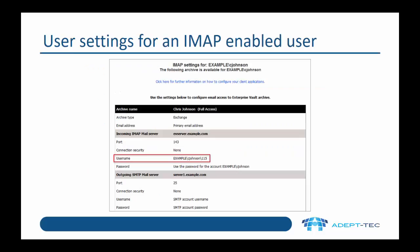Once users are provisioned, they'll be sent a welcome message which looks a bit like this. The key thing that they need is their username. The username for IMAP access in EV is the format: domain backslash username backslash unique number. Obviously, they wouldn't know this number unless they had the notification message.